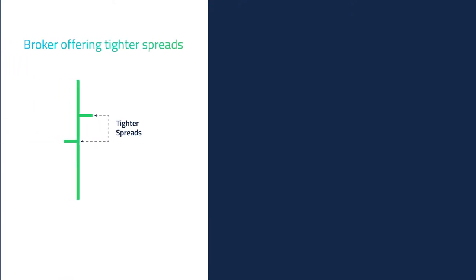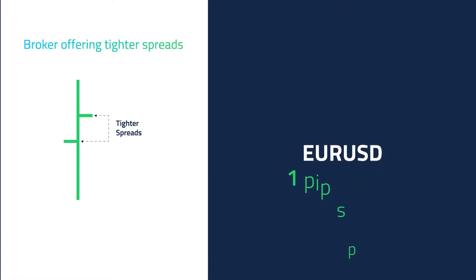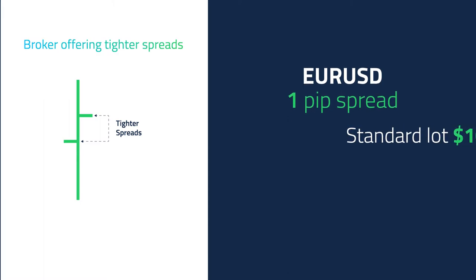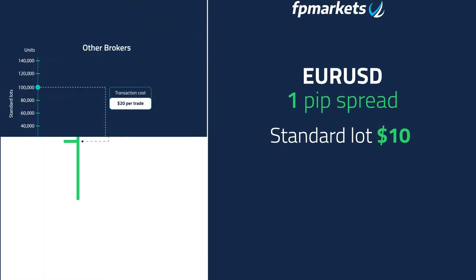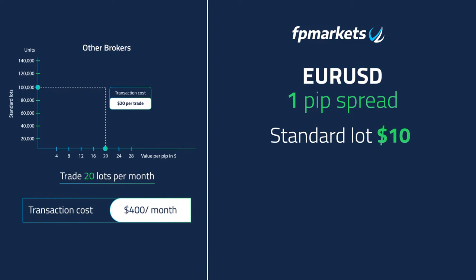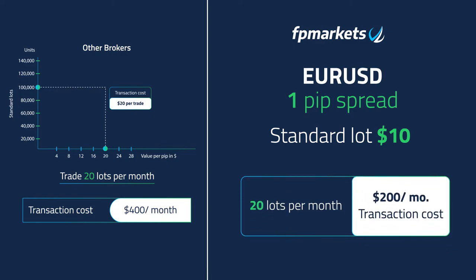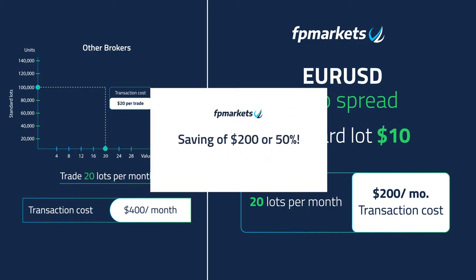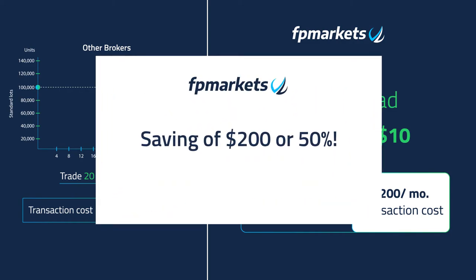However, if the same trade is executed with a broker offering tighter spreads — EURUSD 1 pip spread — your transaction cost on a standard lots trade would only be $10. With the previous example, 20 lots per month would only equate to a transaction cost of $200. You will be saving $200, or 50%.